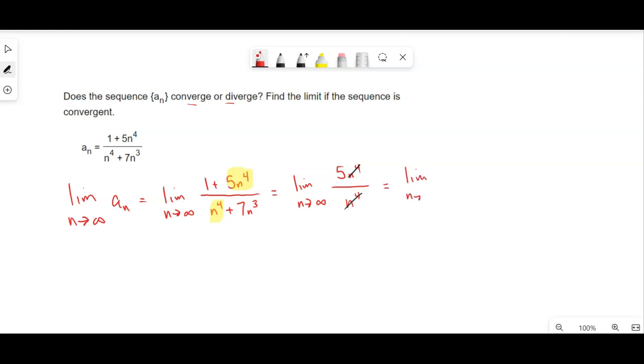So this is just the limit as n goes to infinity of everything that contains an n now that's cancelled out. This is just five. And the limit of a constant is just the constant.